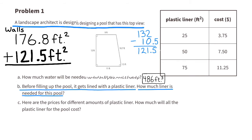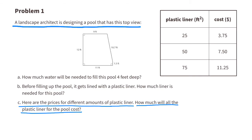Adding the floor area to the area of the walls, they would need 298.3 square feet of plastic liner. Part c: here are the prices for different amounts of plastic liner — how much will the plastic liner for the pool cost? I'll use this information to figure out how much one square foot of plastic liner costs.